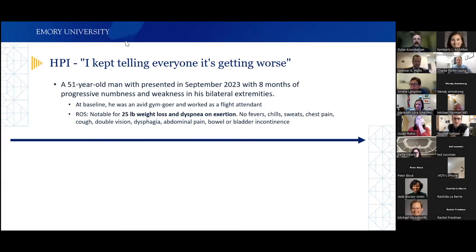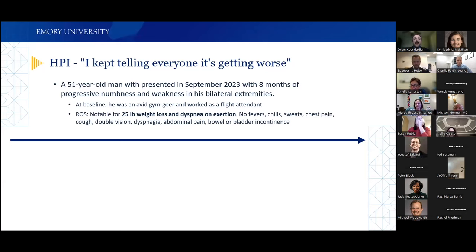Good afternoon, everyone. Very happy to be here and discuss this case. A 51-year-old man presented in September of 2023 with eight months of progressive numbness and weakness in his bilateral extremities. At baseline, he was an avid gym-goer, worked as a flight attendant, and didn't really have any major medical issues.